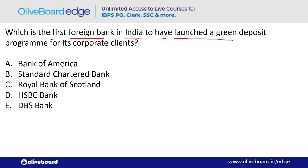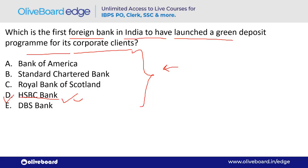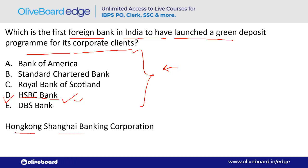Which foreign bank in India has launched a Green Deposit Program for its corporate clients? The answer is HSBC Bank. HSBC funds eco-friendly and renewable energy projects. HSBC's full form is Hong Kong Shanghai Banking Corporation; its headquarter is in London, not Hong Kong.